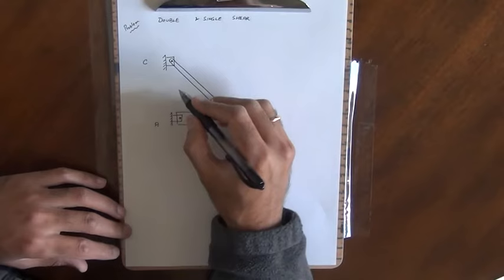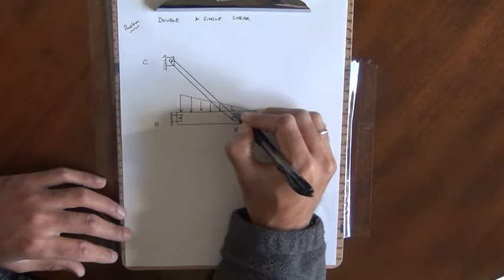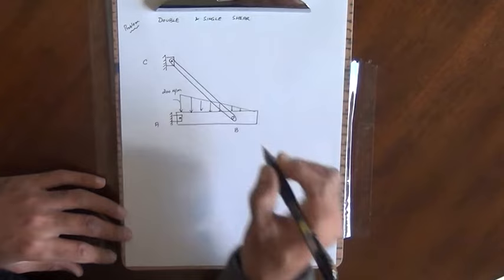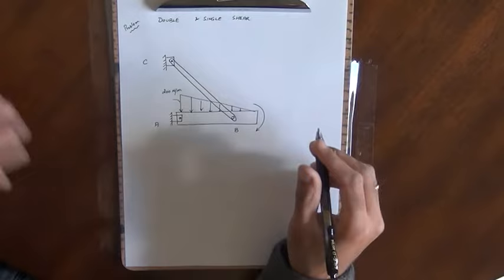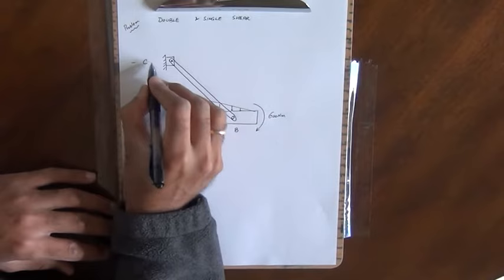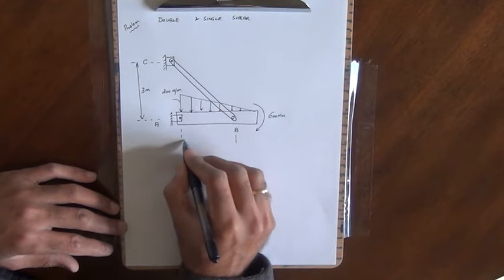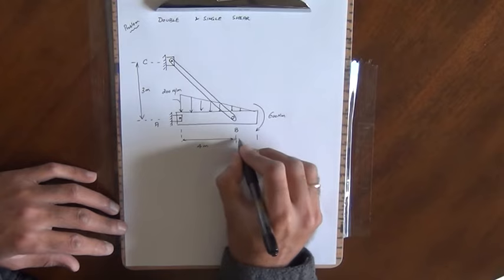On bar AB there is a triangular load distribution given. The intensity of the largest load is given as 200 N/m. There is also a couple moment acting at the end of bar AB with a magnitude of 600 N·m. Some distances are given: distance from A to C is 3 meters vertically, and the distance from A to B is 4 meters. The remainder of the bar AB has a distance of 2 meters.